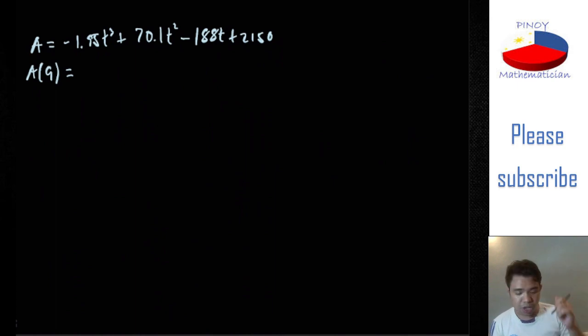Because it's 9 years from year 2000. So negative 1.95T³, or 9³, plus 70.1T², or which is 9², minus 188 times 9, plus 2,150.